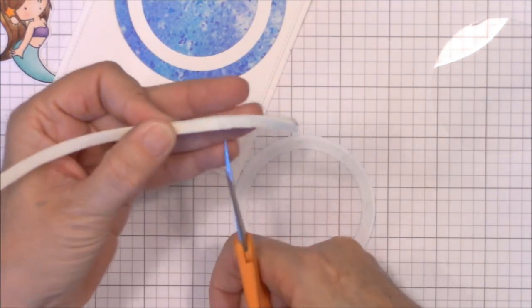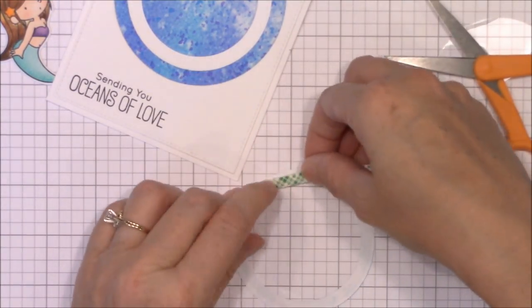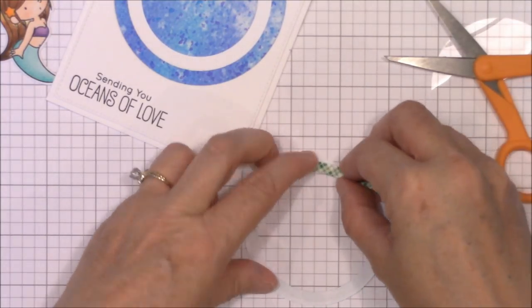You'll need room for that slider disc to slide around. I snip little slits into the foam tape to help form it securely around that circle frame. Don't forget that second layer.